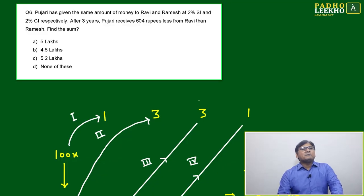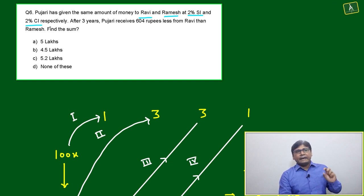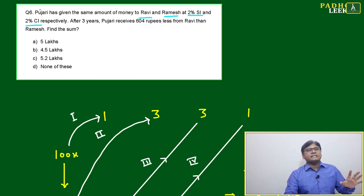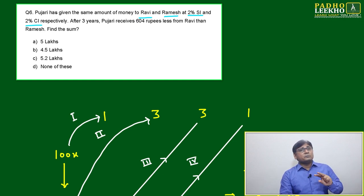Based on the same concept, another question will make it clearer. One person, Pujari, has given the same amount of money to Ravi and Ramesh at 2% SI and 2% CI.